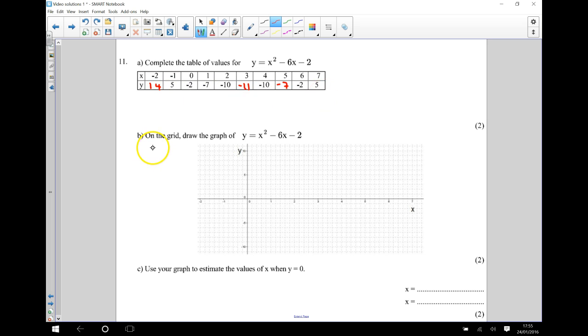And my next task is that on this grid, we need to draw the graph of y is equal to x squared take away 6x take away 2. So I'm going to plot the points from this table. So starting over here, I've got negative 2, 14, which I can't seem to fit onto here, so I'll move on to the next one.